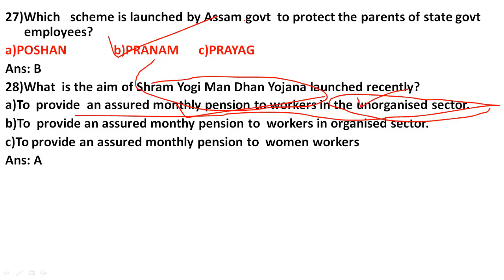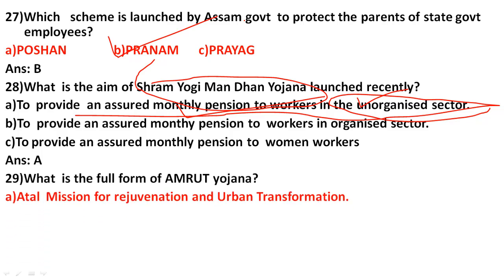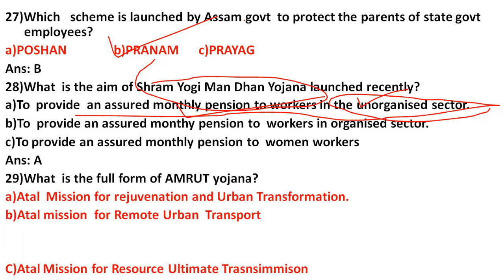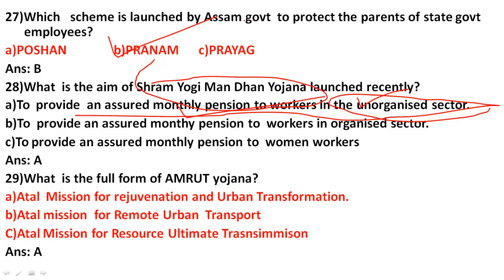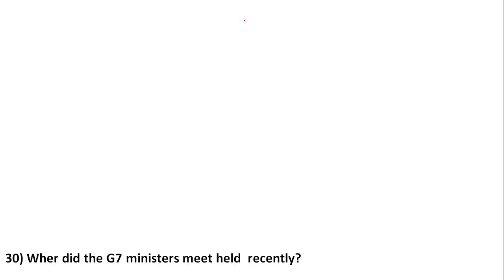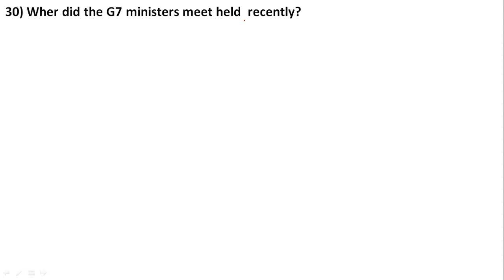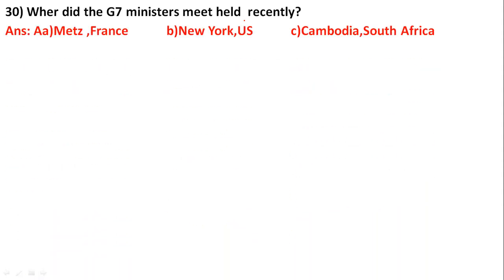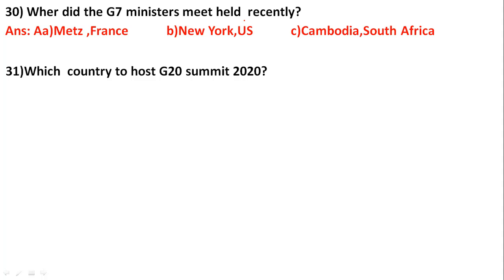What is the full form of AMRUT Yojana? The correct answer is option A: Atal Mission for Rejuvenation and Urban Transformation. Where did the G7 Ministers meeting held recently? The correct answer is option A: Metz, France.